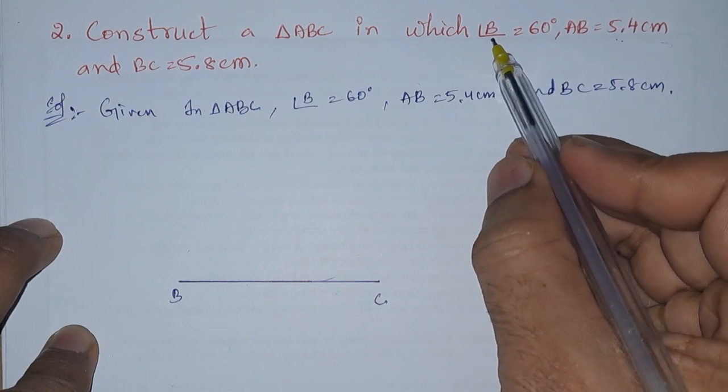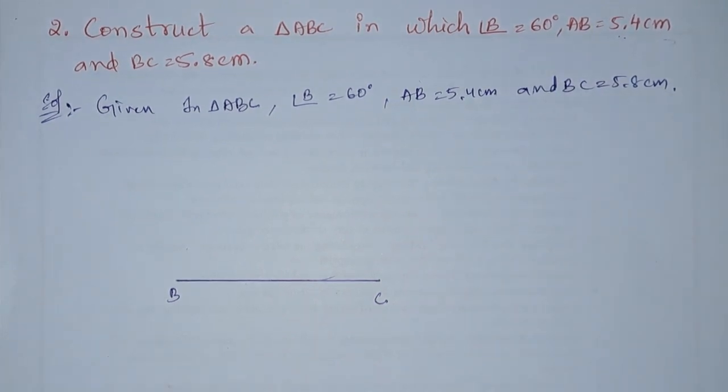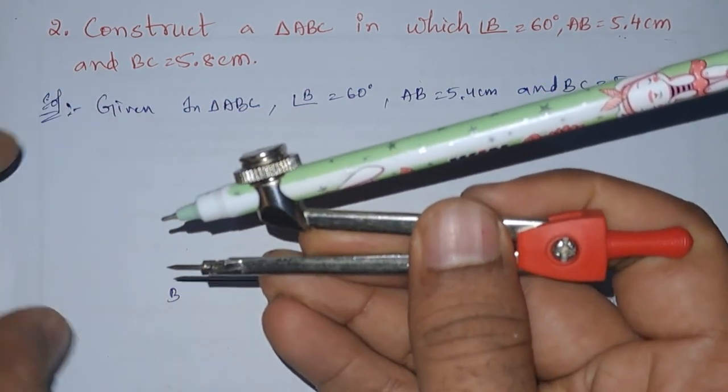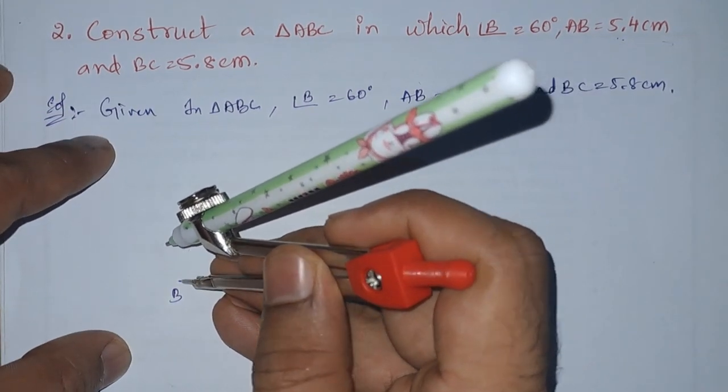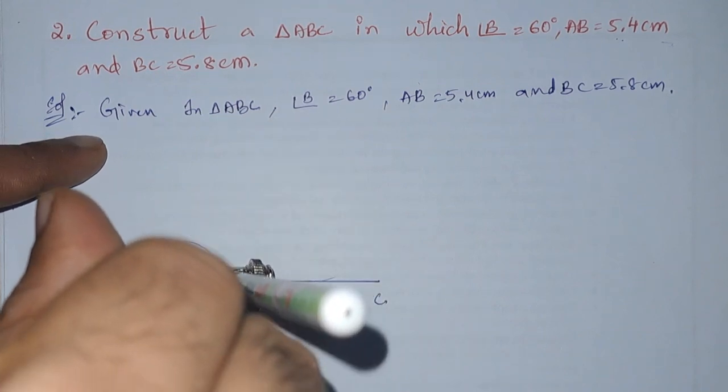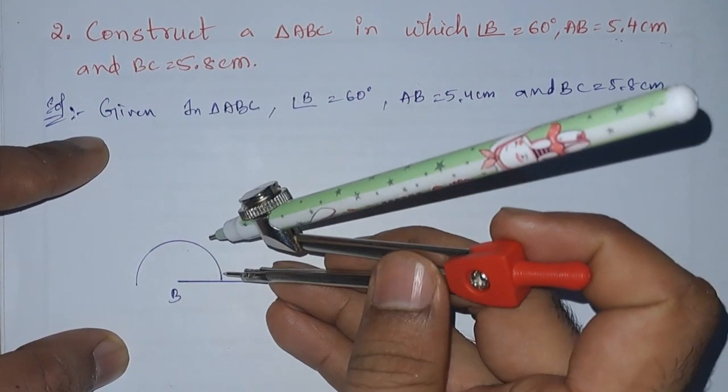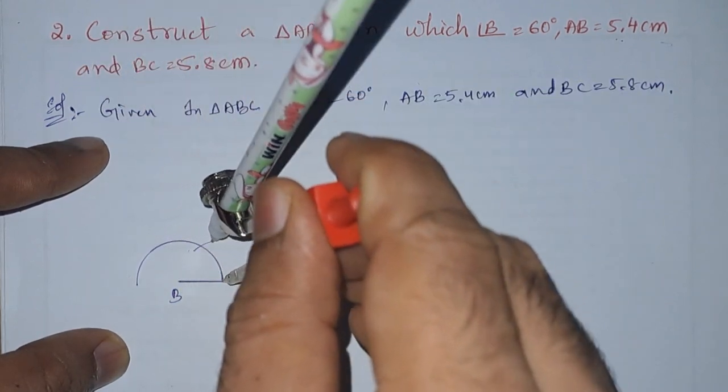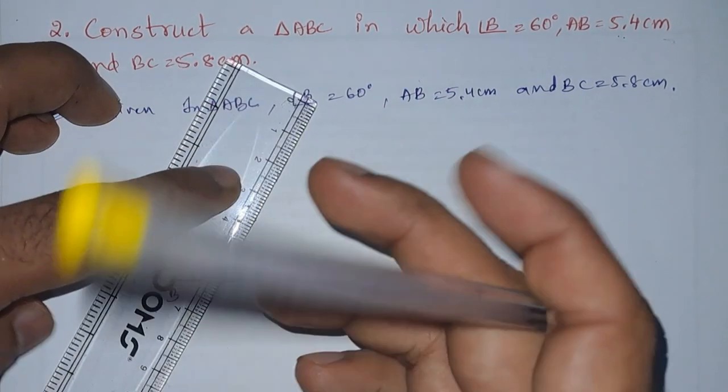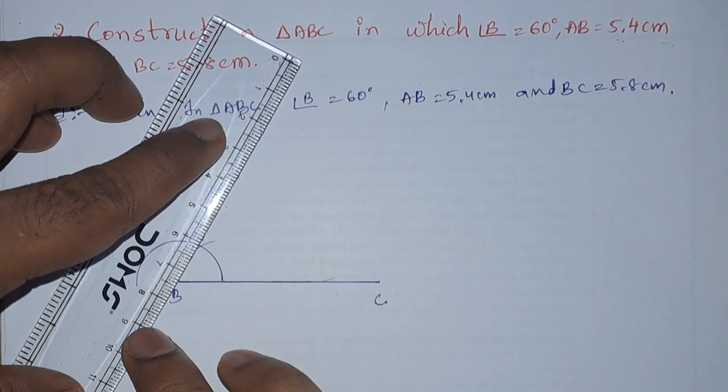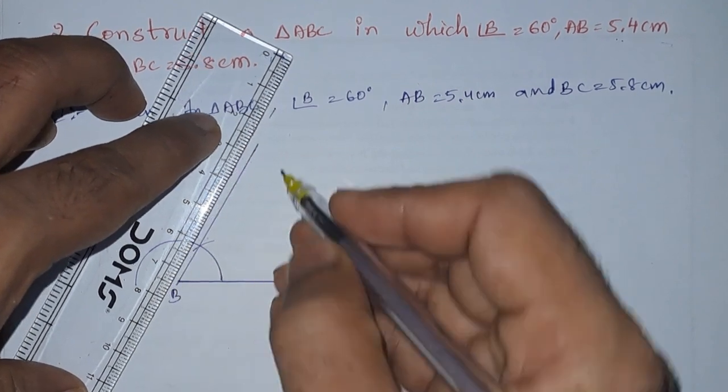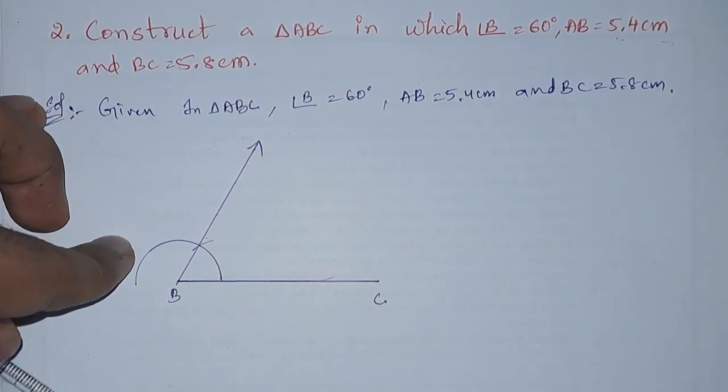They told us to take BC. Angle B is equal to 60 degrees. We will take the compass again, and with some radius, we will draw a semicircle at point B. Once it is done, then we will cut this semicircle from one of the points. The point where we got the intersection, at that point we will join with B because it is forming 60 degrees. So this is 60 degree ray.